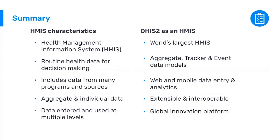A quick summary of this presentation. Starting with HMIS characteristics: an HMIS is a health management information system used for routine health data for decision making. It needs to include data from many programs and sources — supply chain data, HR data, infrastructure data, health and clinical service delivery data, and disease surveillance data from health facilities. It can contain both aggregate and individual data, as well as event data.